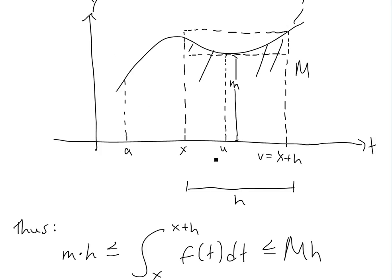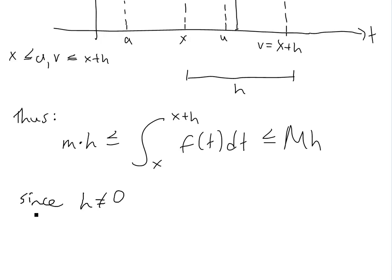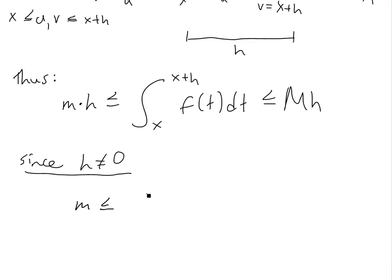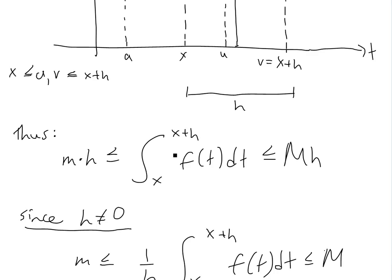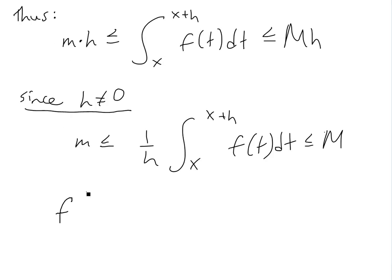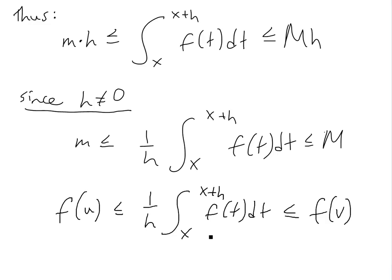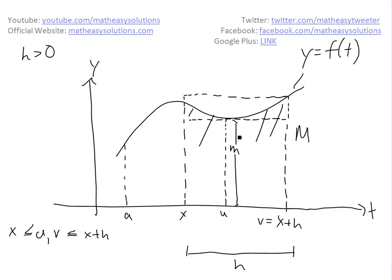Since h is not equal to zero, we can divide by h on both sides. So we get: little m is less than or equal to (1/h) times the integral from x to x+h of f(t) dt, which is less than or equal to capital M. We can rewrite this as f(u) is less than or equal to (1/h) times the integral, which is less than or equal to f(v), since m equals f(u) and M equals f(v).